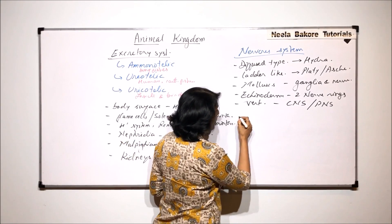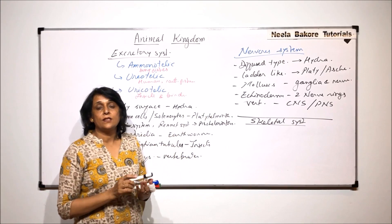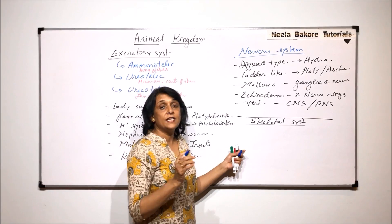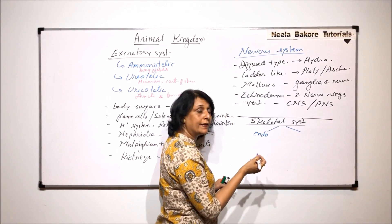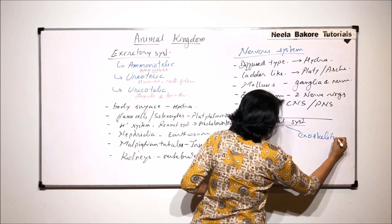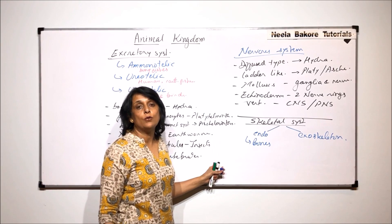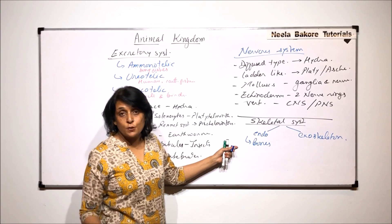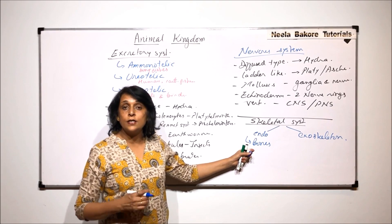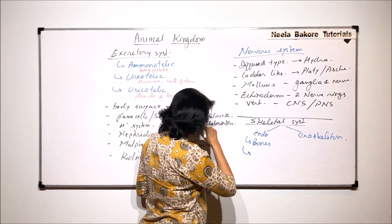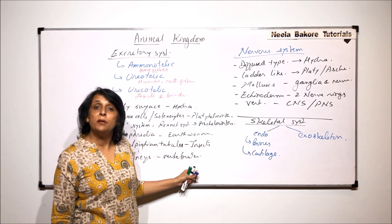The third system we can discuss is the skeletal system. The skeleton is the structure that provides framework to the body. If this framework is inside the body, it is called an endoskeleton; if it is outside, it is called an exoskeleton. Endoskeleton includes bones, found in most vertebrates, especially bony fishes. In cartilaginous fishes, the endoskeleton is made of cartilage.